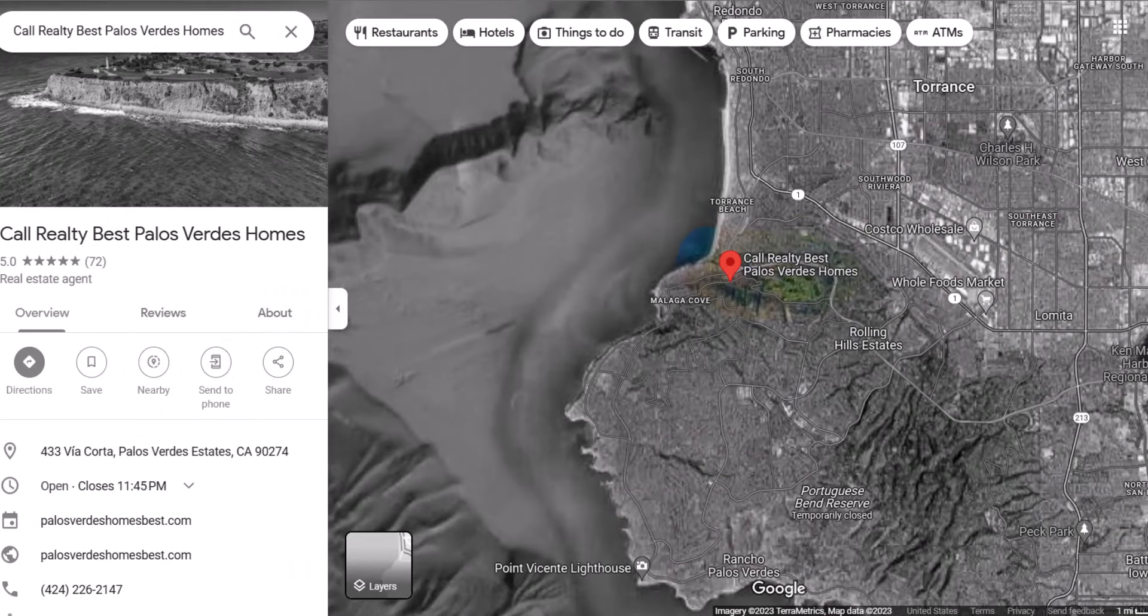Hi, everybody. This is George Foshan. I'm a broker with Call Realty Best Palos Verdes Homes, and the scene behind me is where my office is at 433 Via Corta in Palos Verdes Estates.